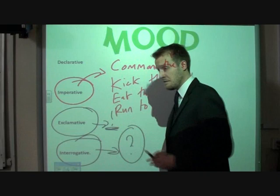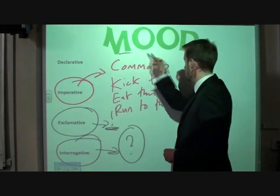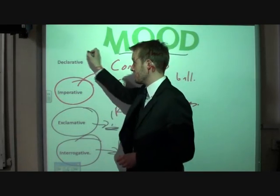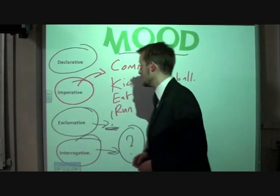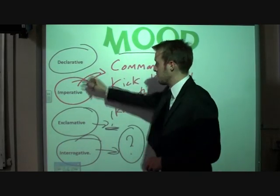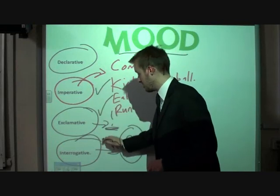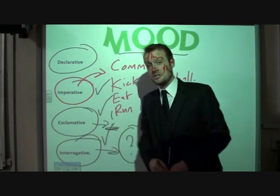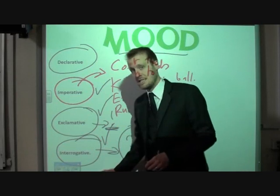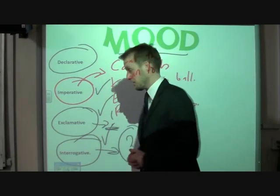By looking at the moods of a sentence, we know that a lot of the sentences you use will be declarative — a lot of them will be. And you can add variety simply by putting in one command, one exclamation, and one question. That immediately creates some variety and starts to move you up to the next mark.